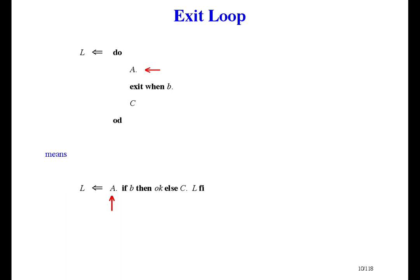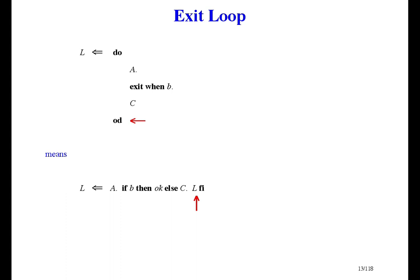Here's what it means. In execution, the first thing that happens is A. The next thing is B is tested, and if it's true, that's the end of execution of the loop. If B is false, execution continues with C, and then the loop is re-executed. Both these refinements have the same execution, so proving the second one — which doesn't have any loop construct in it — is the way to prove the first one.